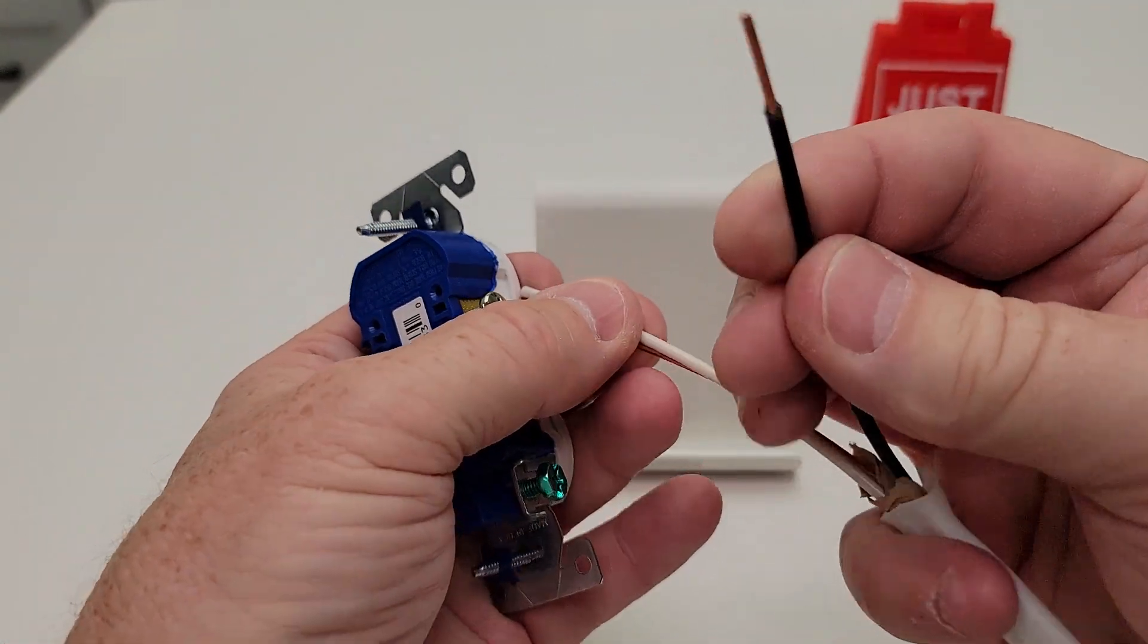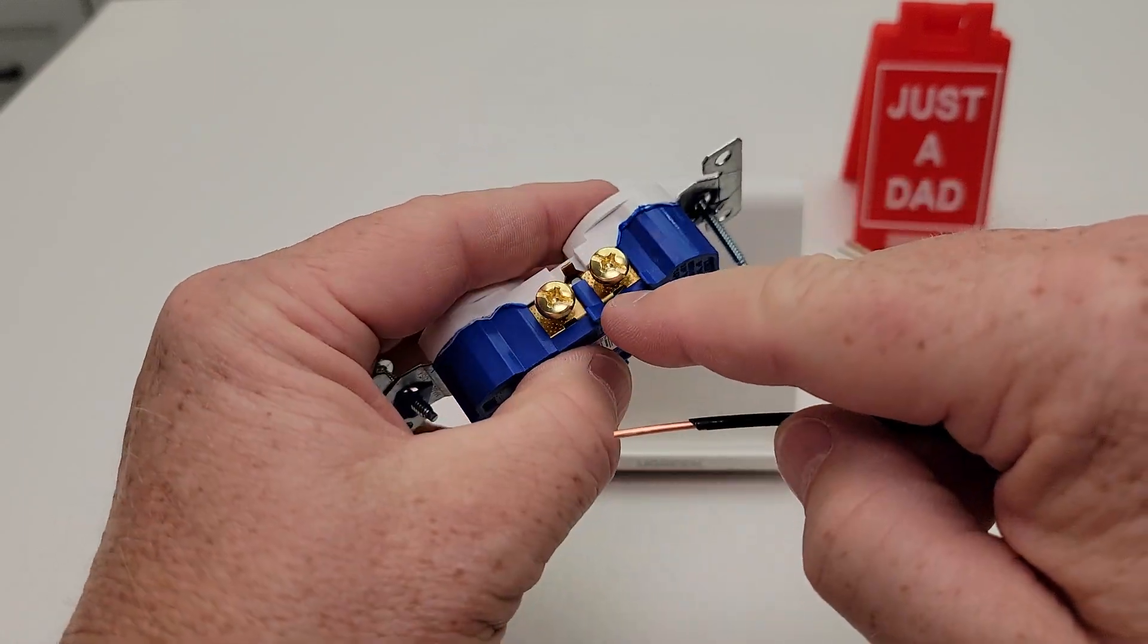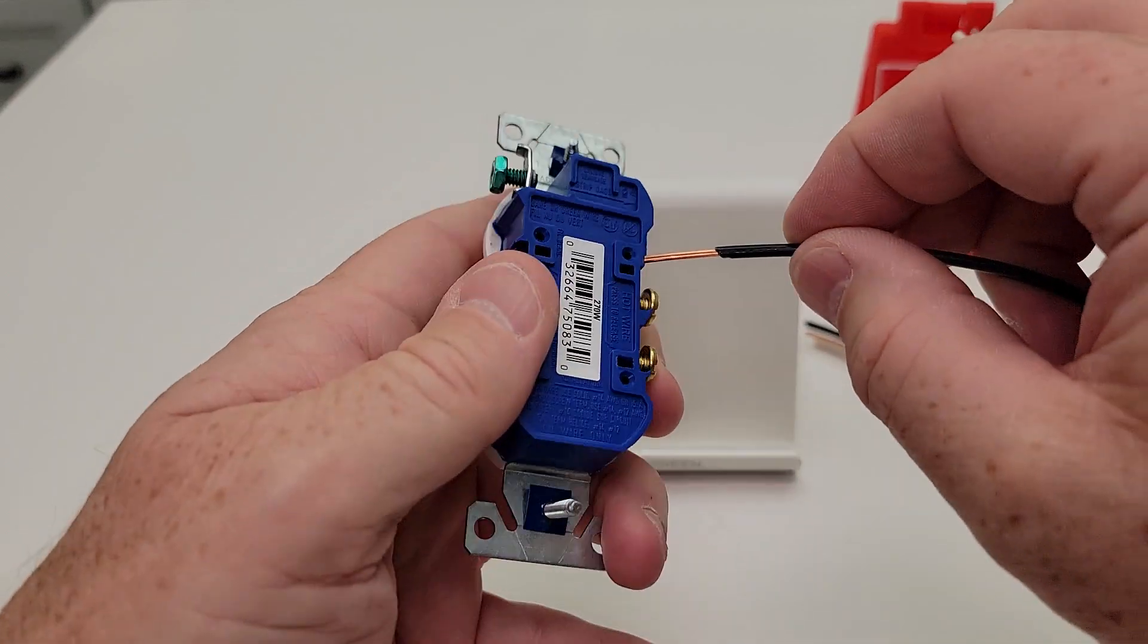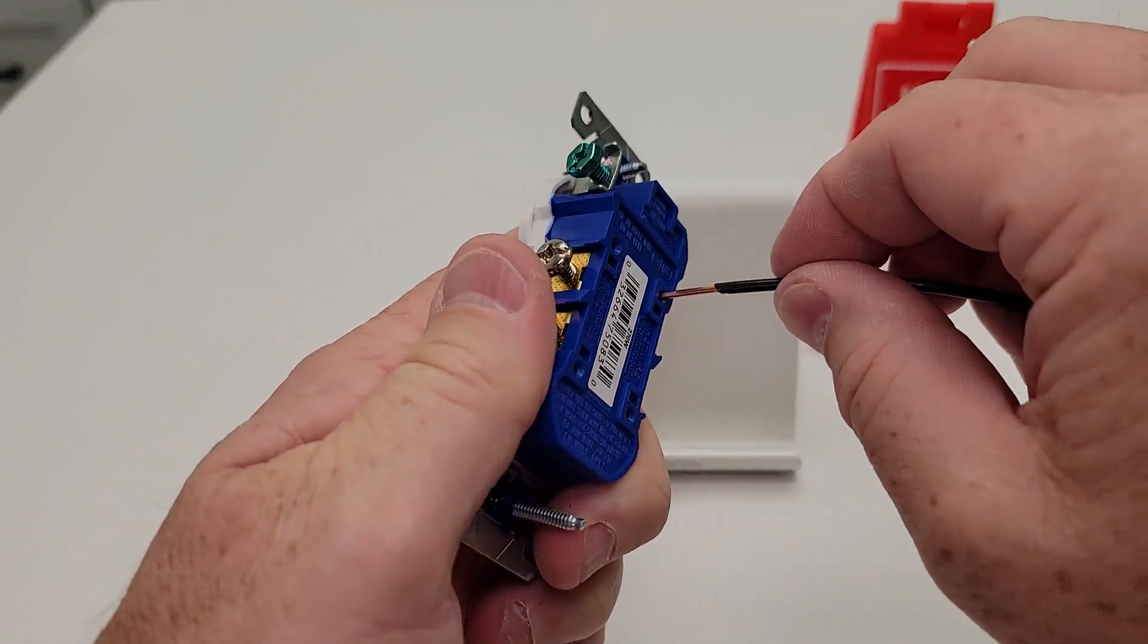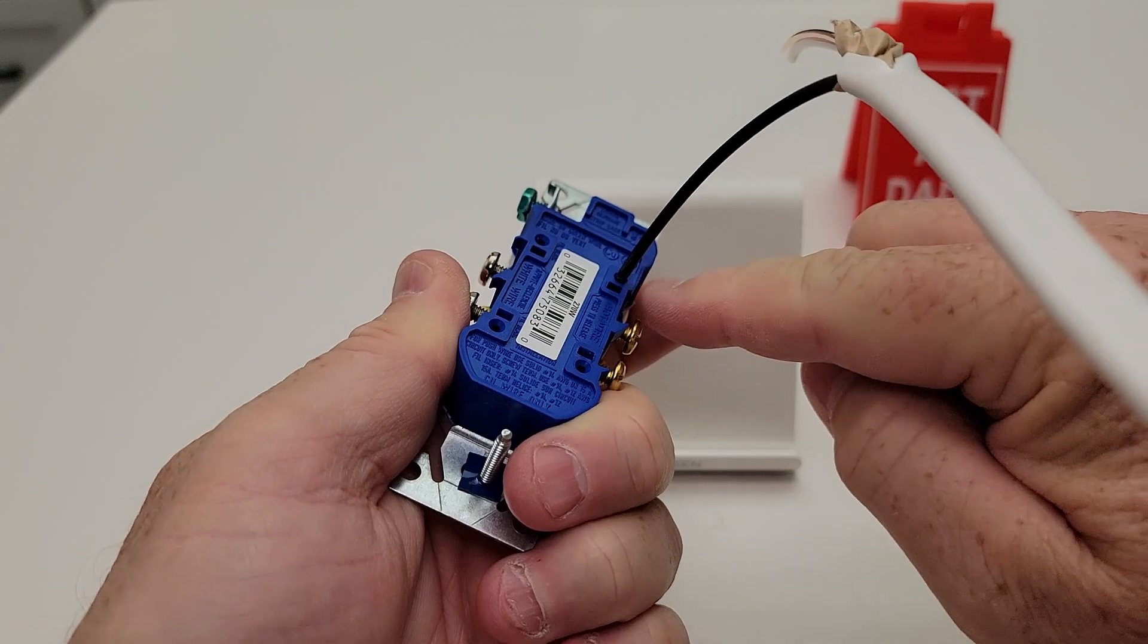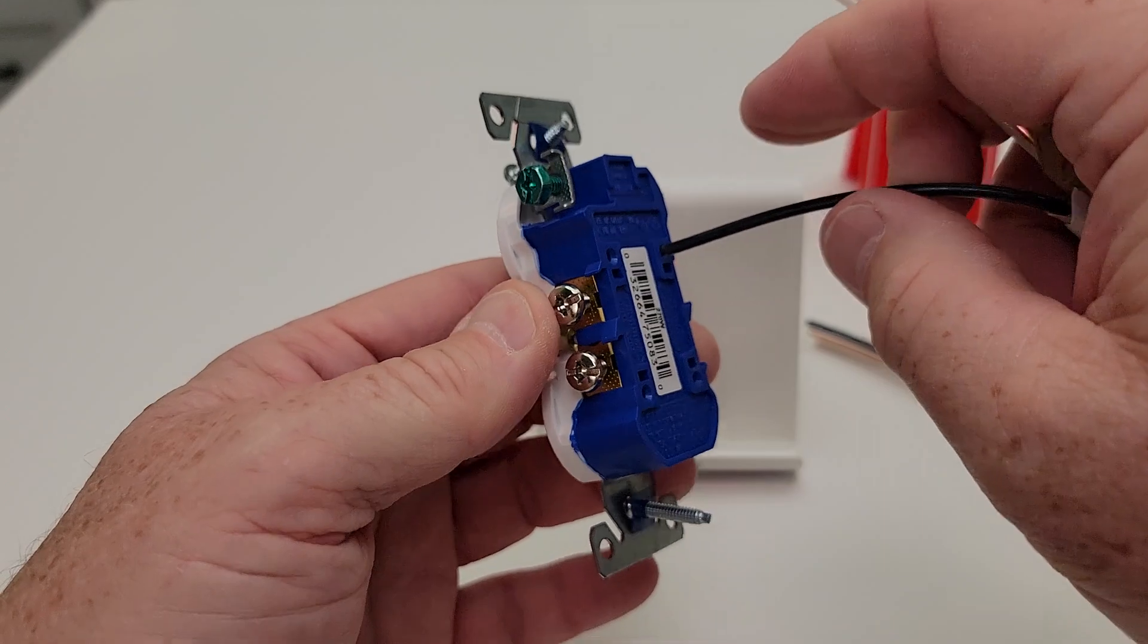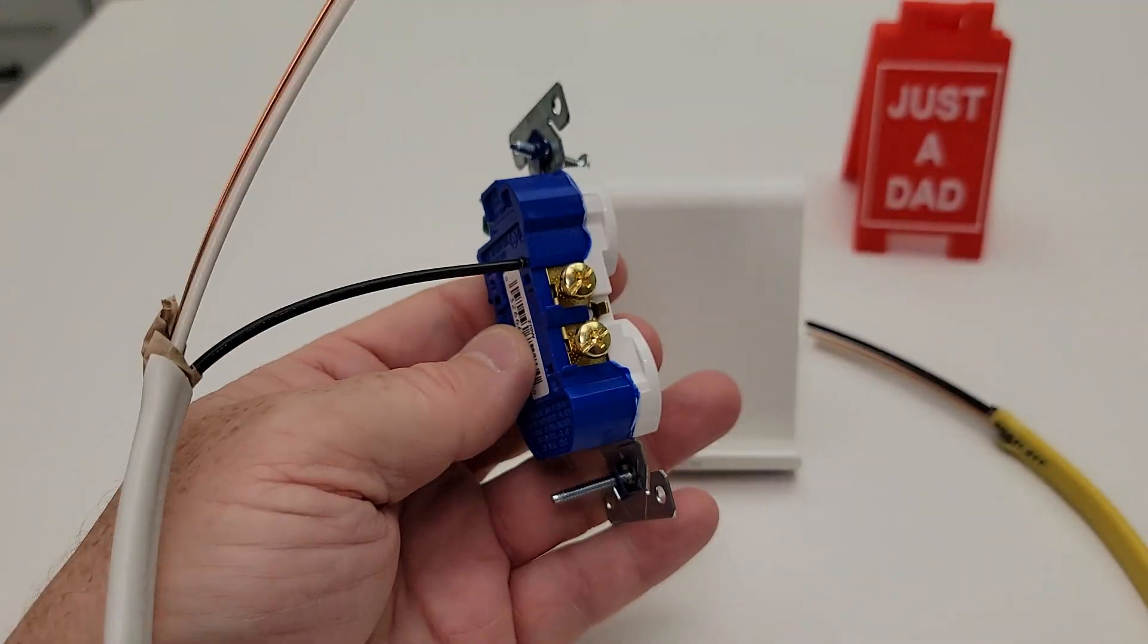Now I've got the hot wire. I go to the gold side and I can poke it in either this one or this one. Once you poke it in, it's going to be hard to come out. Push it in until it stops. There should be very little insulation showing. You can tell that's a nice, good friction fit. I don't have to screw the screws down.